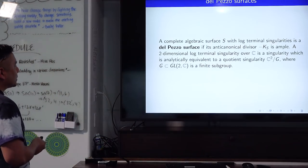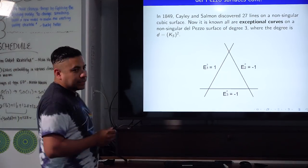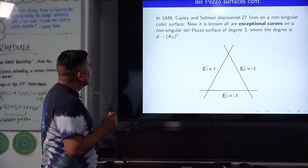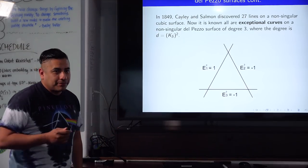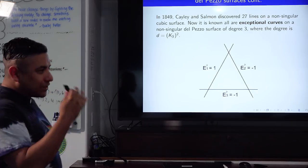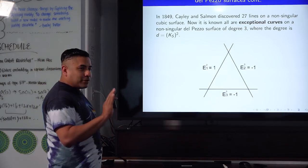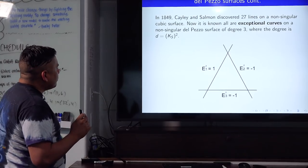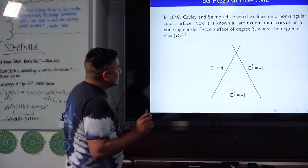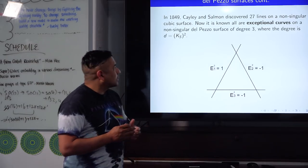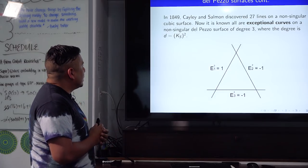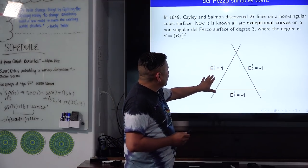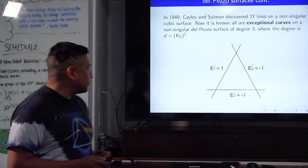Going back to 1849, Cayley — the same Cayley associated with octonions — discovered 27 lines on a non-singular cubic surface. In modern times these are called exceptional curves on del Pezzo surfaces of degree three, where the degree is given by a specific relation. The 27 lines are definitely related to the 27 we've seen in Jordan algebras.